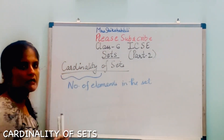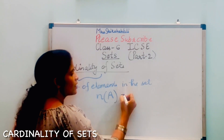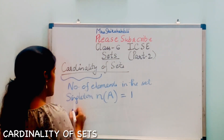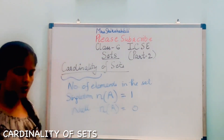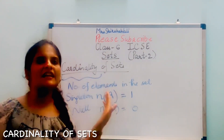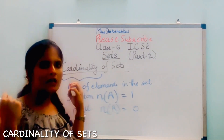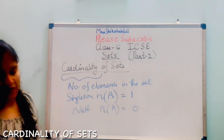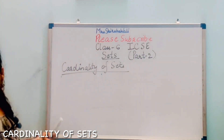A singleton set has only one element, so its cardinality is 1. A null set has no elements, so its cardinality is 0. For a finite set, count the elements and write the number. For an infinite set, cardinality is not defined because the elements are uncountable.